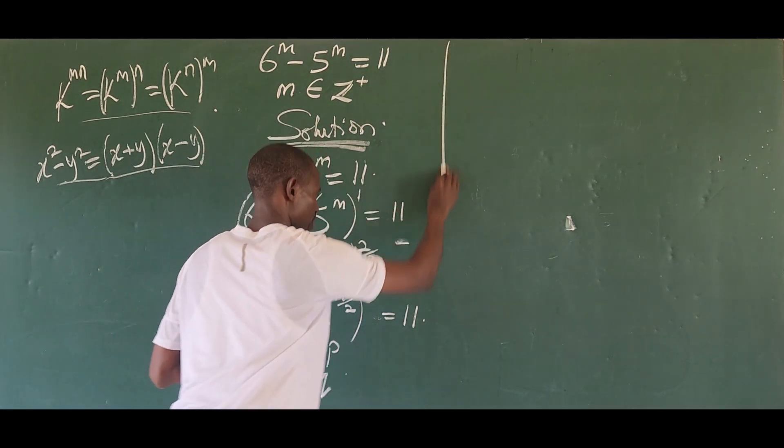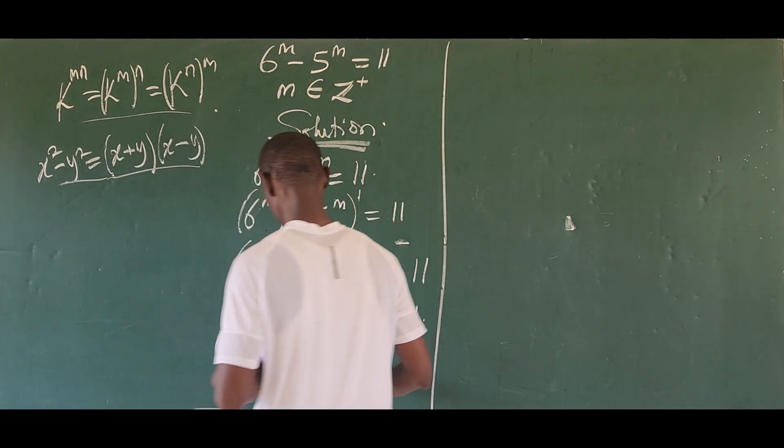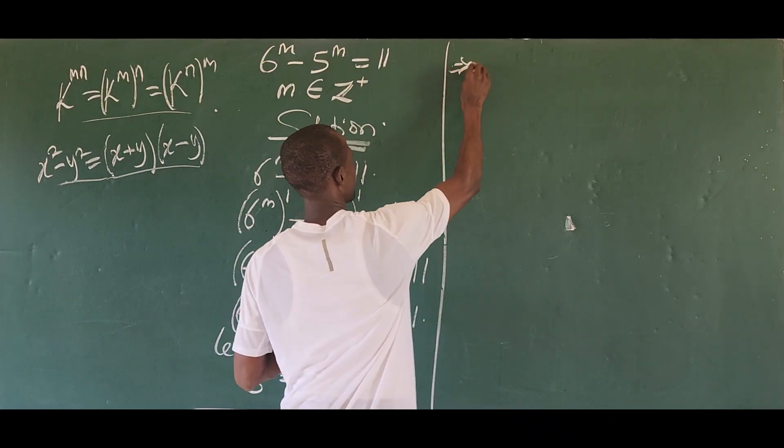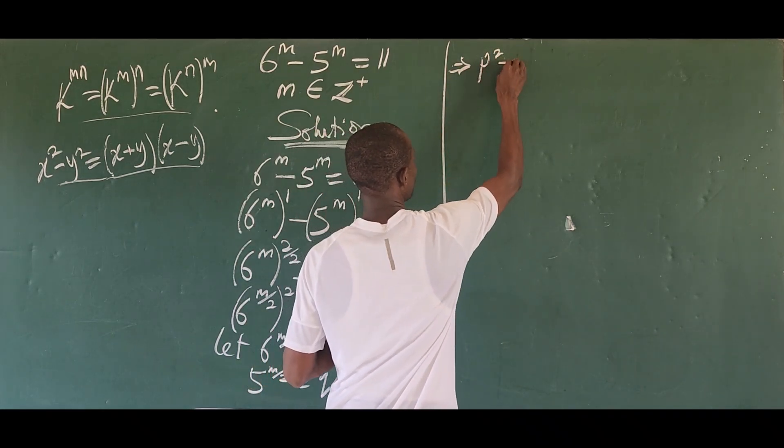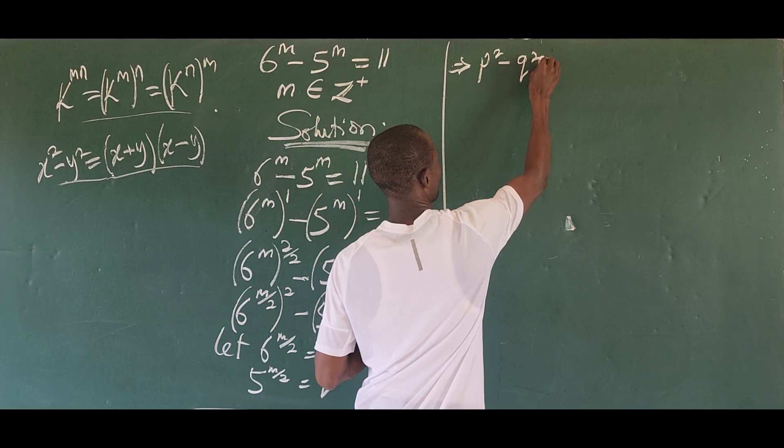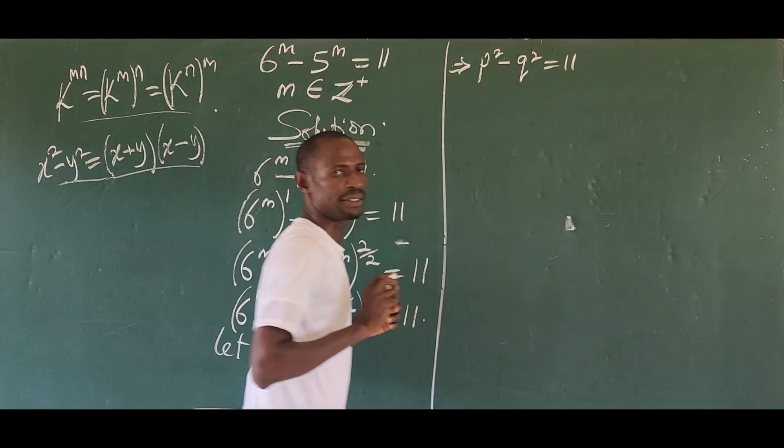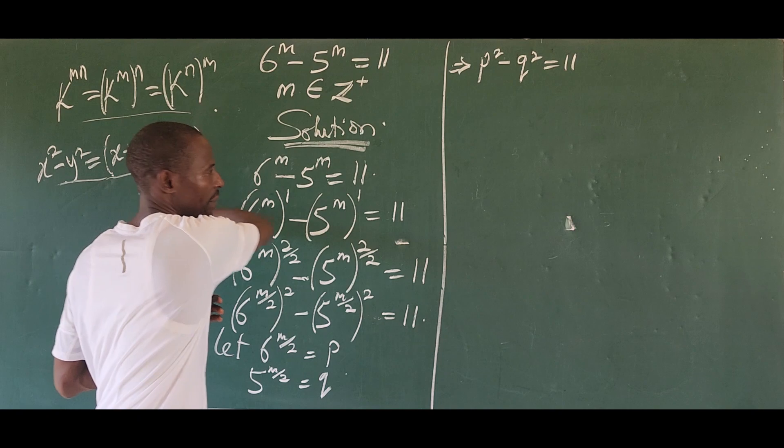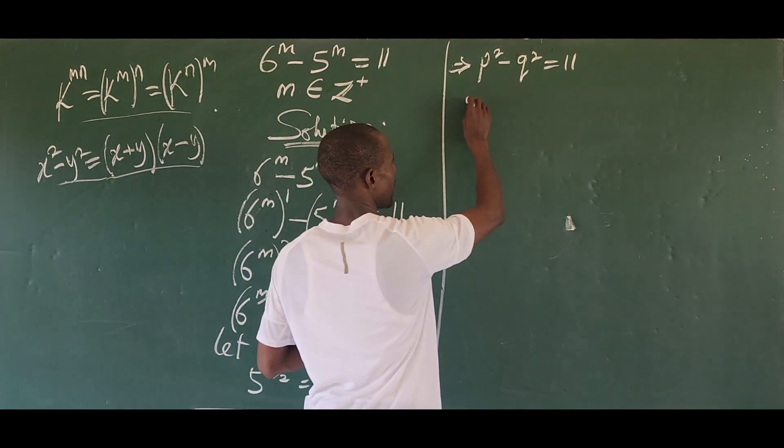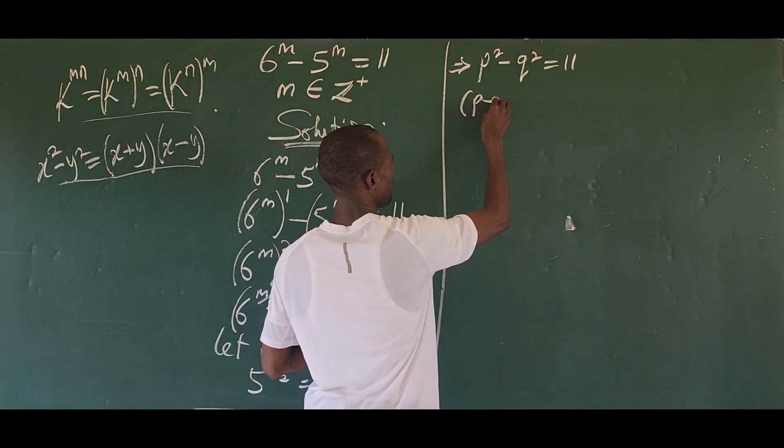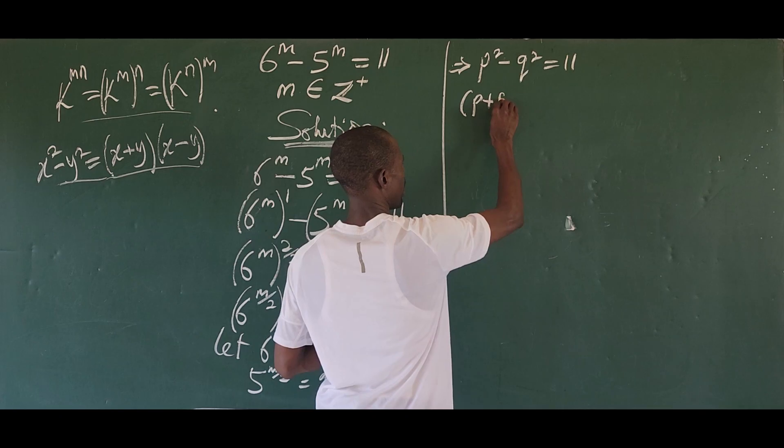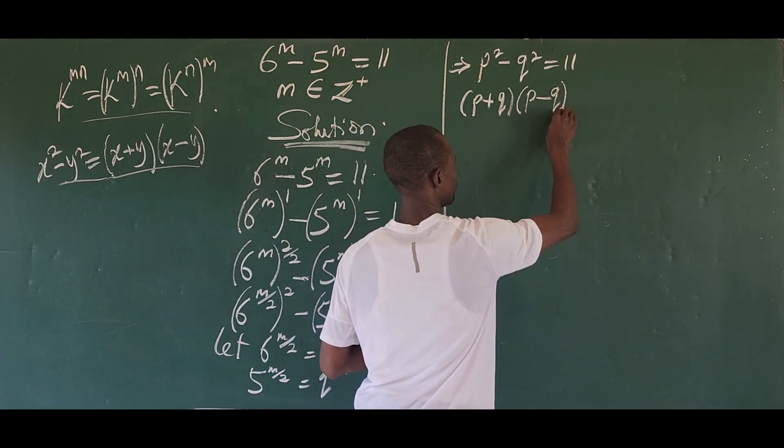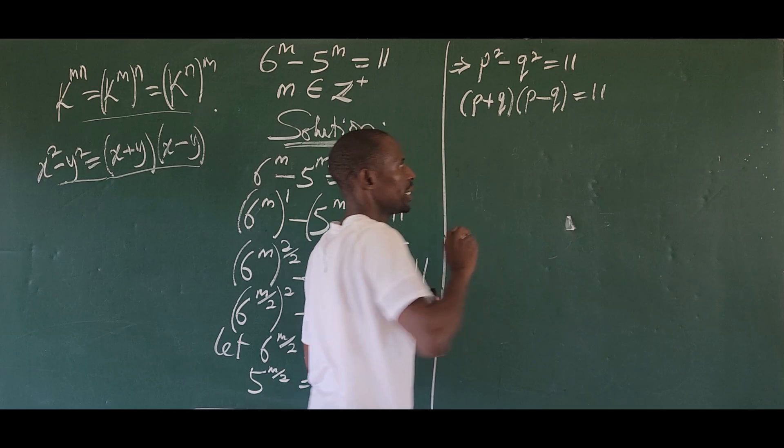So if I have that to be sure, what am I going to do here? So I can put this in here, put this in here. So this now implies that my p to the power of two, minus my q to the power of two is equal to 11. So what we do next here now is to go ahead and apply this rule here. So if we apply this rule, we'll have our p plus our q, bracket p minus our q equal to 11.